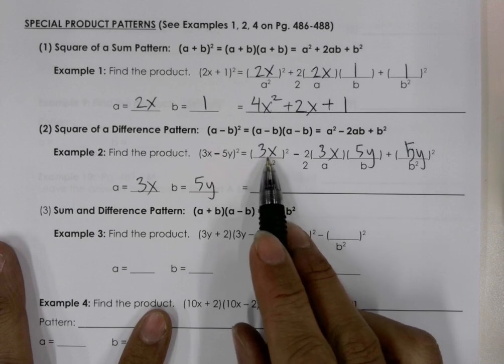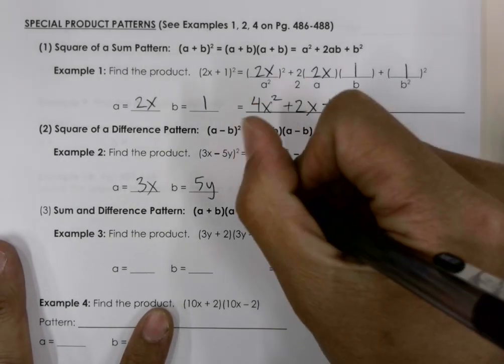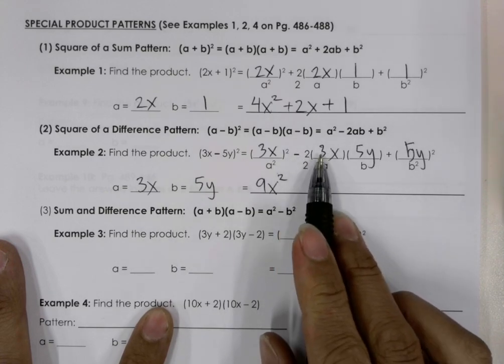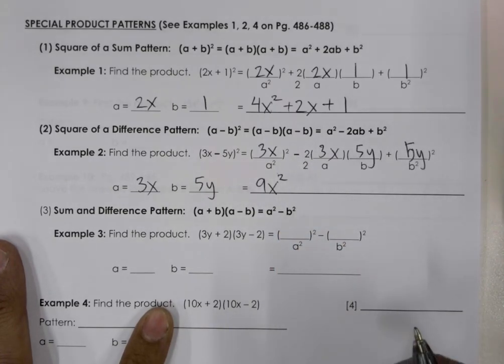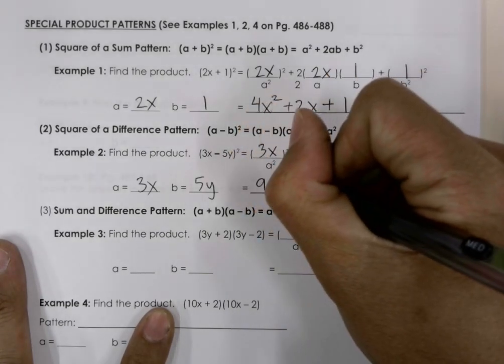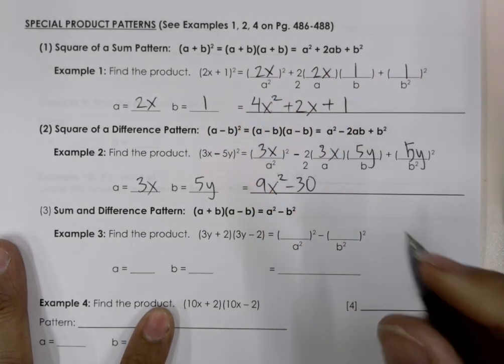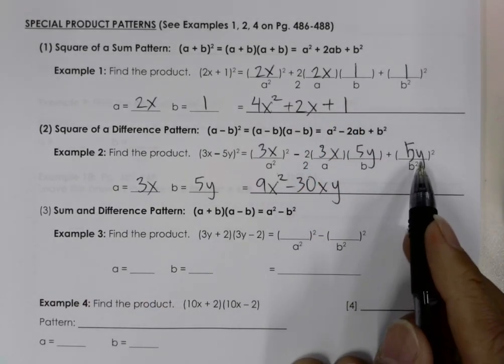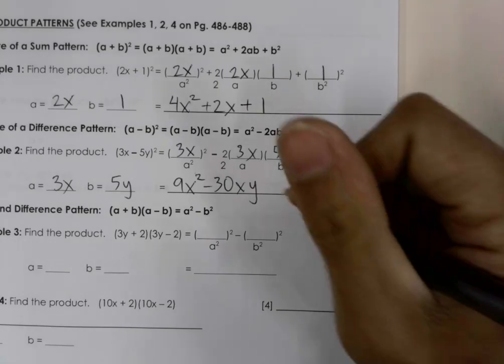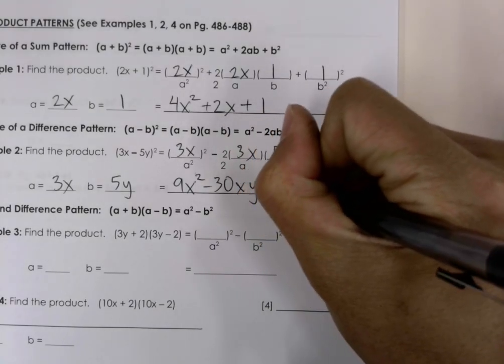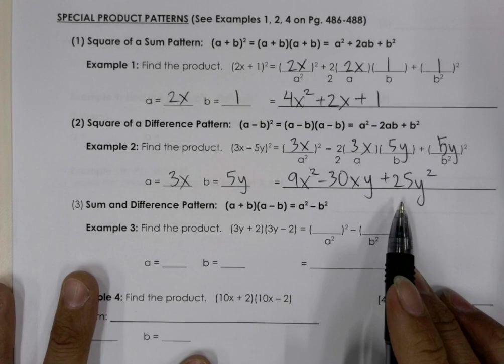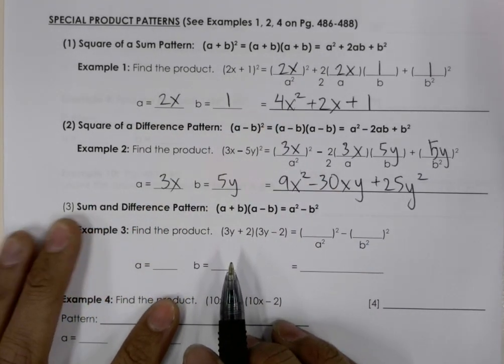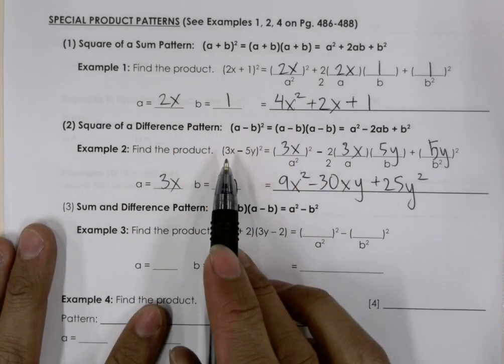So then we'll go ahead and work out the math. 3x times 3x, because this is (3x)², is going to be 9x². This one here is going to be negative 2 times positive 3 times positive 5, that's going to be negative 30. And then we have x times y, so it's going to be xy. And then at the end we have (5y)², so that's 5 times 5, which is 25y². And that's our final answer. So again, this is all different techniques to save you time when you find that it fits one of these patterns: (a + b)² or (a - b)².